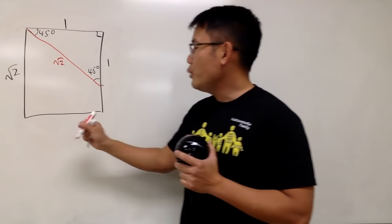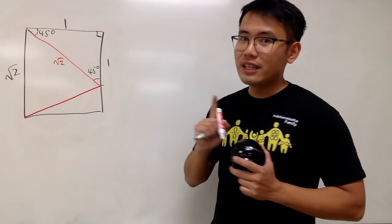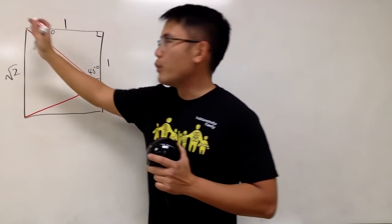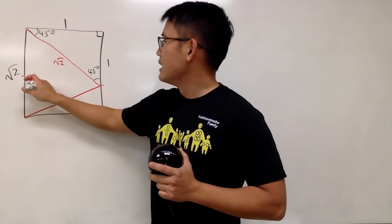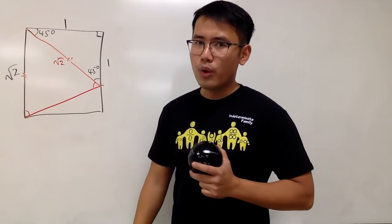Then what we'll do is we will just connect from here to here. The reason is because this is square root of 2, this is square root of 2. And now we have an isosceles triangle. This and that are equal. That means this angle and this angle will be equal.